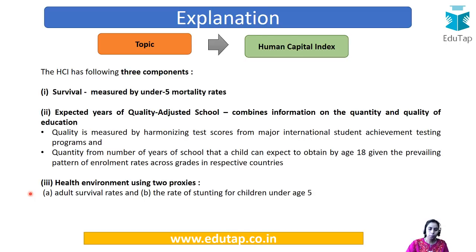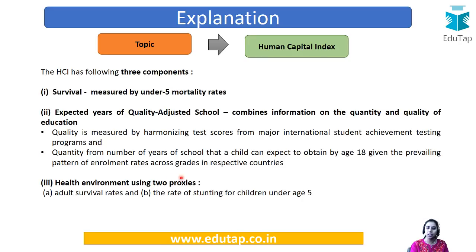The third component is health environment. Health environment is important because the environment of a person determines health significantly. There are two sub-parameters: adult survival rate and the rate of stunting. Adult survival rate is a proxy for life expectancy, which is not directly a parameter here. Stunting is basically the ratio of a child's height compared to his or her weight, and it is considered a major problem in developing nations. These components are very important from the point of view of your examination.